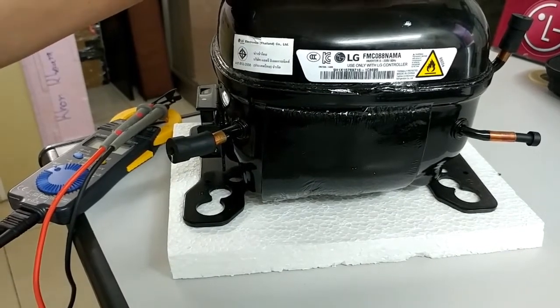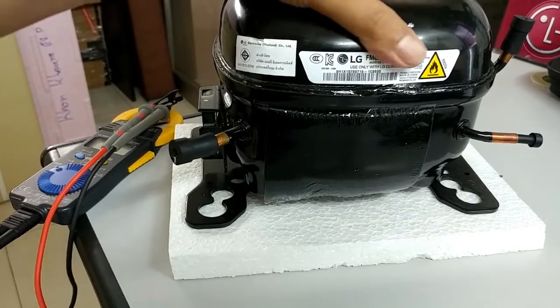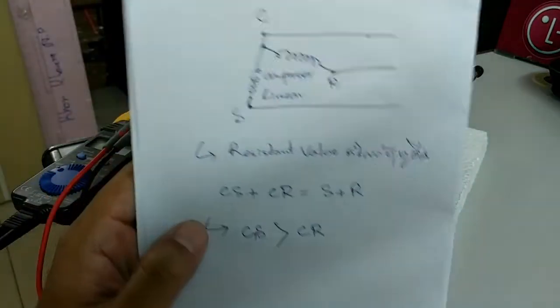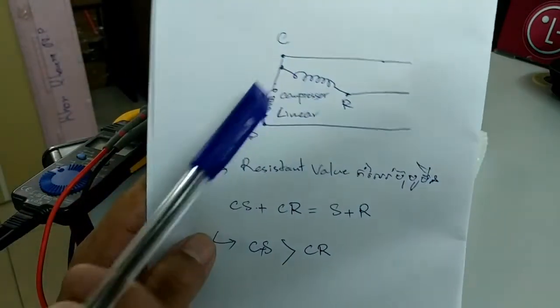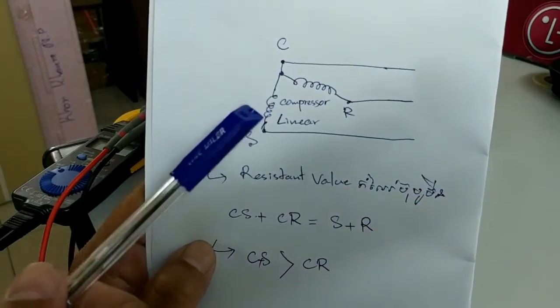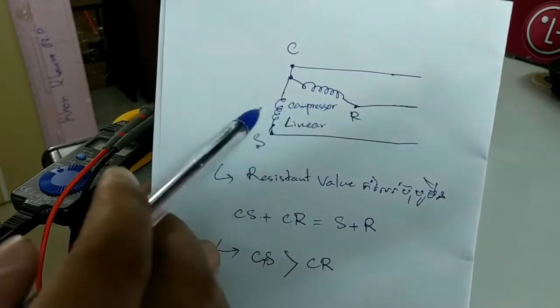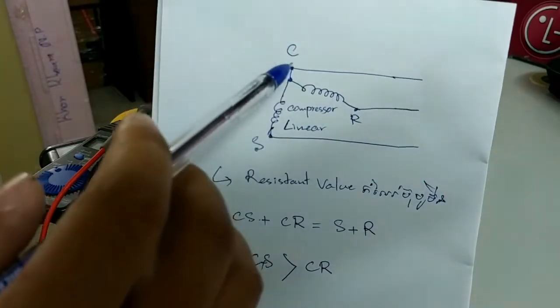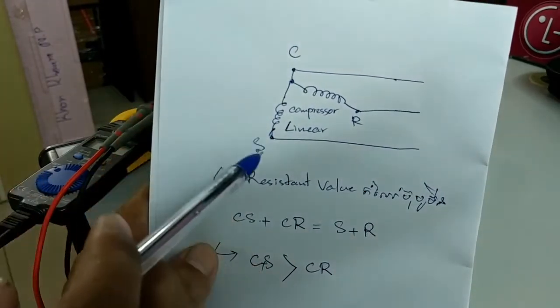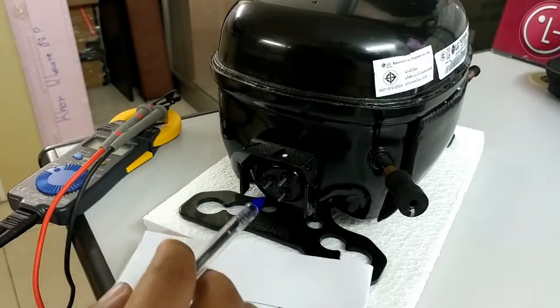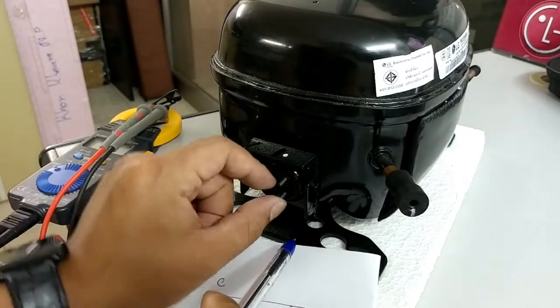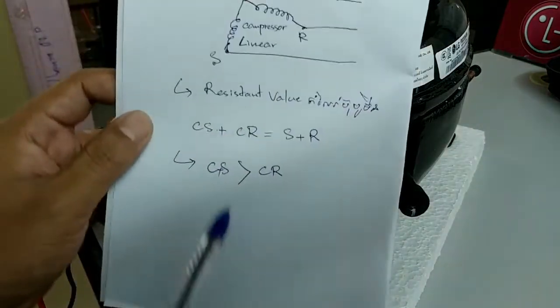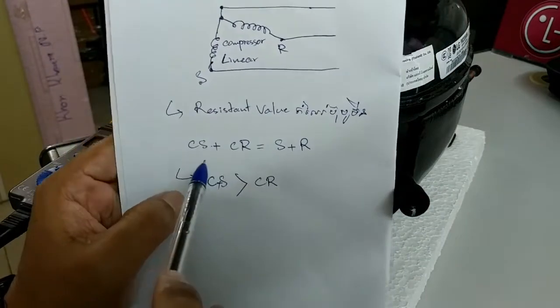Now I will measure to show you how to measure this new compressor. Normally we have a coil resistance like this, we have two coils. This is what we call compressor linear, so we have C coil, S, and L, like the compressor terminal connector.